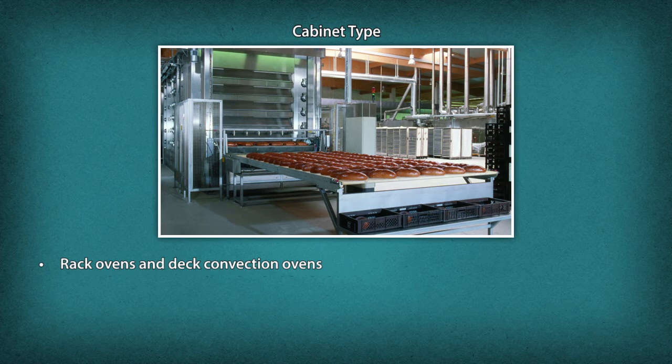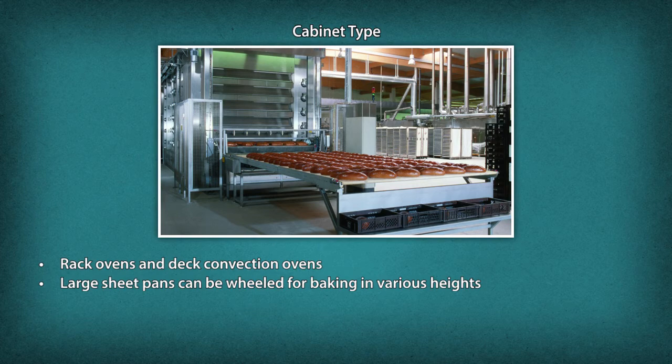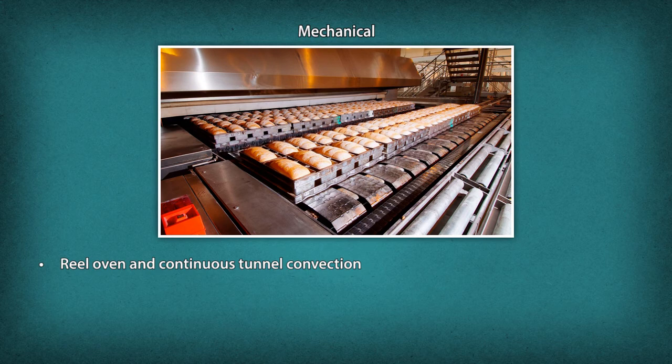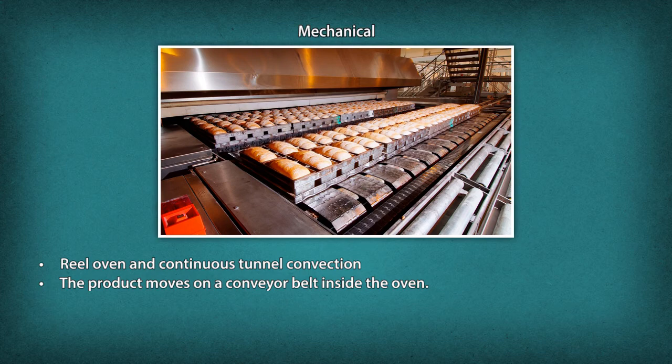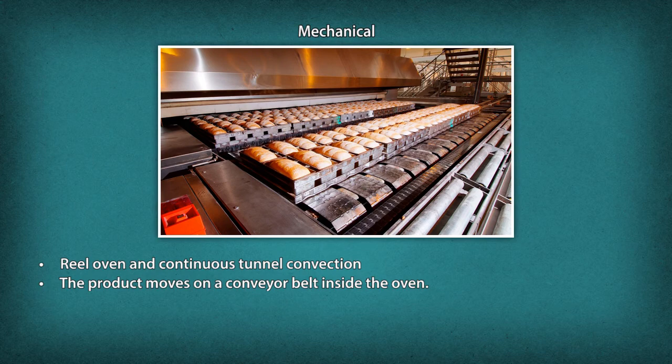Mechanical: Reel oven and continuous tunnel convection — the product moves on a conveyor belt inside the oven, useful for uniform baking of biscuits. Masonry: Wood fire ovens used in private shops and cafes, where an optimum temperature of 450 degrees centigrade is maintained.